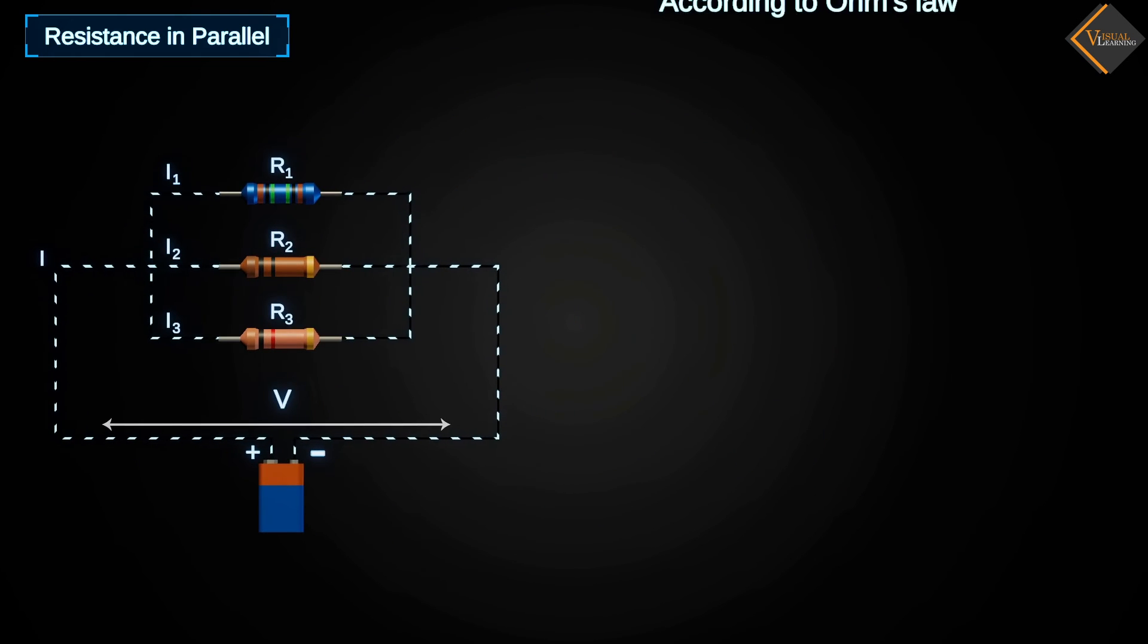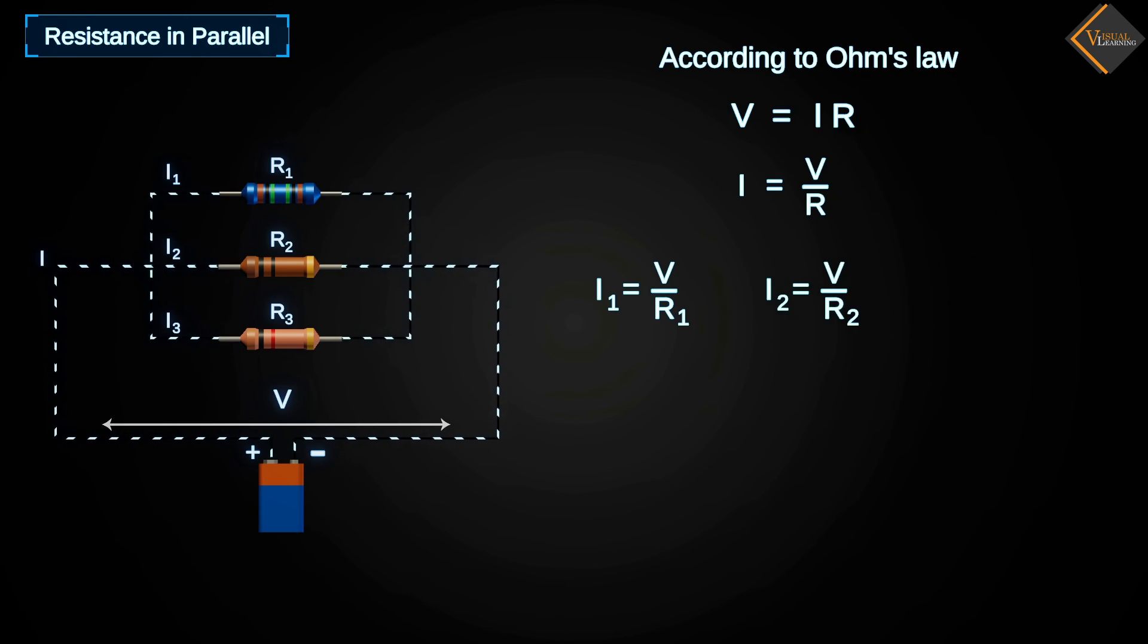Again, according to Ohm's law, the value of voltage is equal to the product of current and resistance. From this equation, if we want to find the value of current, we get a relationship that allows us to find I1, I2, and I3.